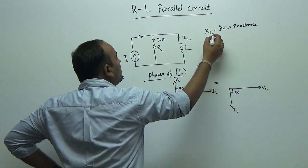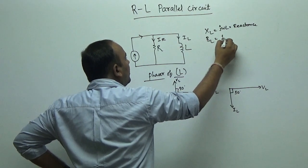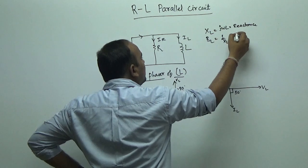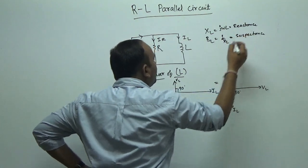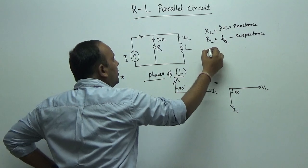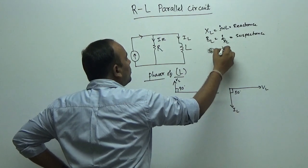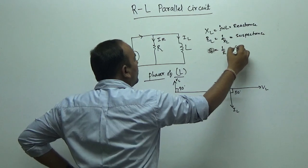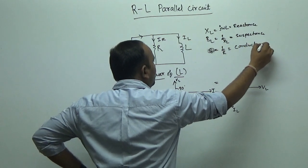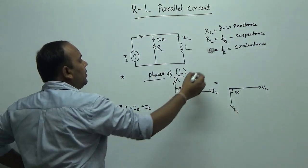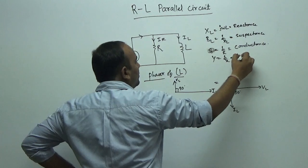V over XL gives the susceptance. S is equal to 1 upon Z, which is conductance. And Y is equal to 1 upon Z, which is admittance.